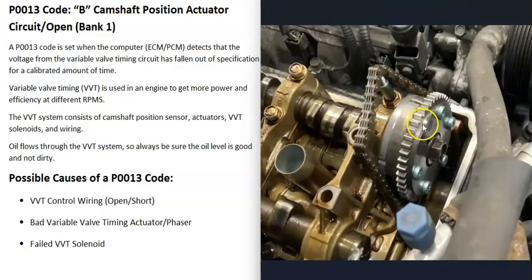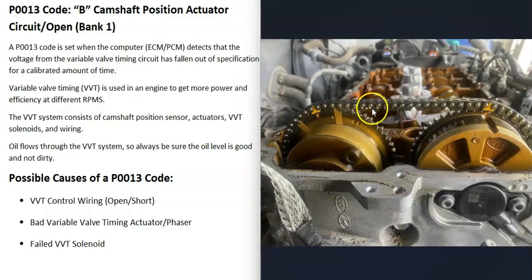The next possible cause is some kind of issue with the actuator, sometimes called a phaser. This is located directly at the front of the cam and is what the timing chain or timing belt rides on. Oil flows into these actuators and it works off pressure coming from the variable valve timing solenoid. Depending on how much oil and oil pressure there is, it can adjust the timing.